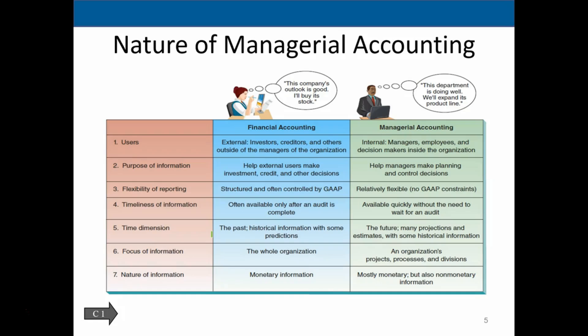Time dimensions: financial accounting focuses on past historical information with some predictions. Financial statements report on past information — the balance sheet shows where we are at a specific point in time, and the income statement shows what happened over a specific period. For the managerial side, the whole purpose is future predictions. We use past numbers, but we look towards the future and think about future planning with many projections and estimates.